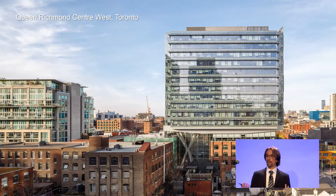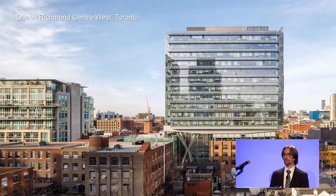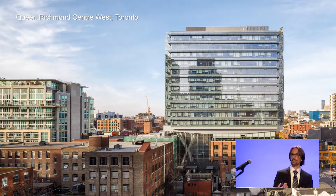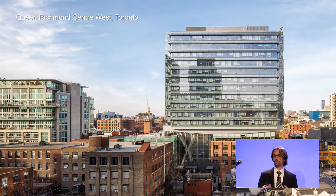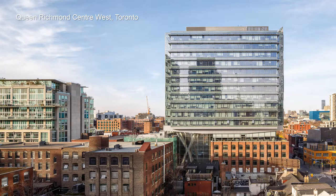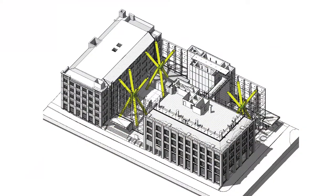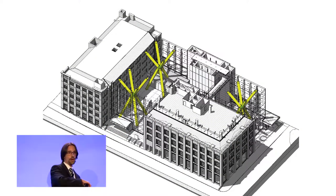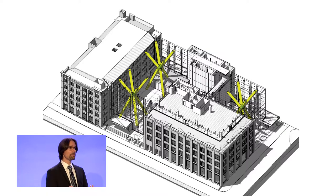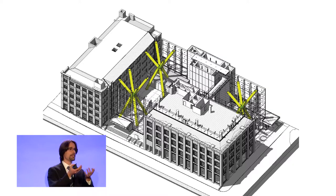Nothing works better than case studies to understand what castings can do for you as designers. This is a project in Toronto, Canada — the Queen Richmond Center Tower West. There were two existing heritage structures on a site surrounded by an L-shaped parking lot. The developer decided they wanted to build an 11-story office tower, but wanted to put it up in the air above the existing two structures.